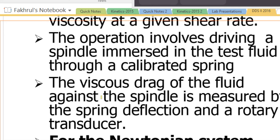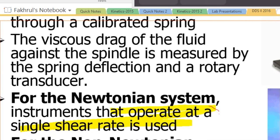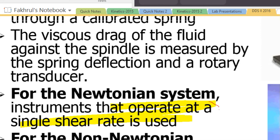For non-Newtonian systems, a simple viscometer with a spindle can be used, but the machine must have the option to change the shear rate over time — or it will gradually increase shear rate. In this way you can properly characterize non-Newtonian systems.